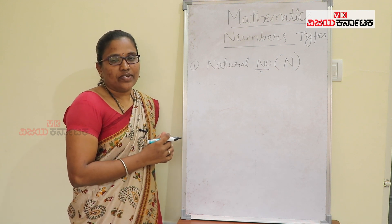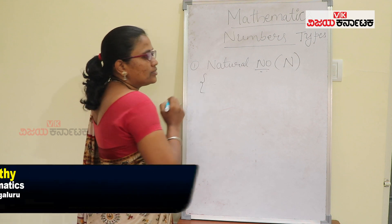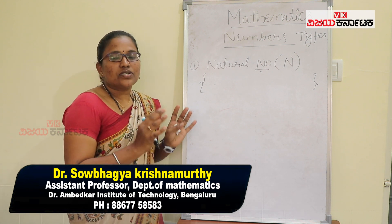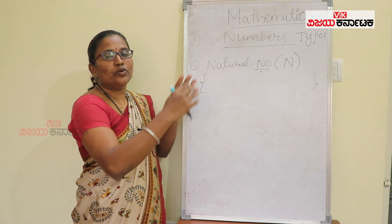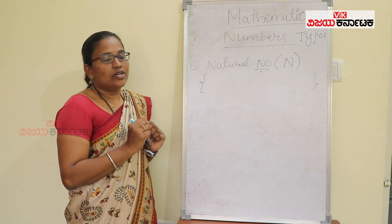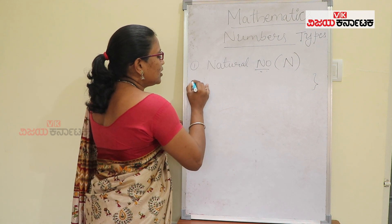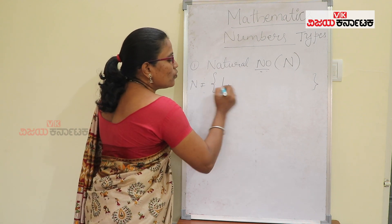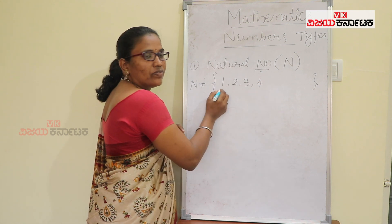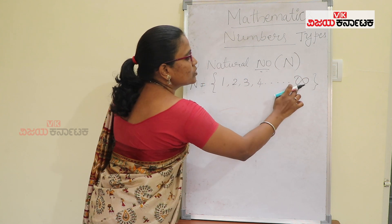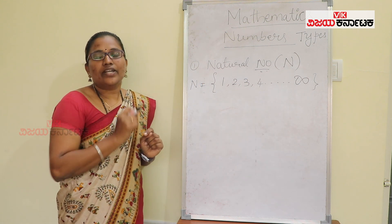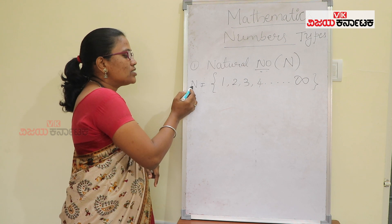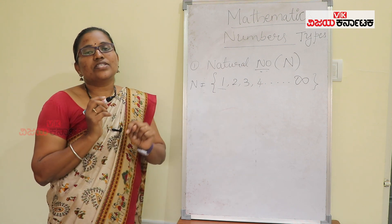What are natural numbers? In a set — the first thing is a set. A set is a collection of objects, that is, a collection of numbers. I will represent the natural number set. It is a collection of numbers which starts from 1, 2, 3. It starts from 1 and ends up to infinity. This is called the symbol for infinity — infinity is not defined. So natural number means a set of numbers which starts from 1. This is the first type of number.